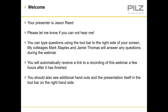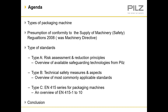The agenda for today will cover the different types of packaging machines on the market, presumption of conformity to the machinery safety regulations 2008 (the machinery directive), and using designated standards. We'll give an overview of the three types of standards: Type A — EN 12100, risk assessment and risk reduction principles; Type B — technical safety measures; and then the main body on Type C standards, EN 415 parts 1 to 10.